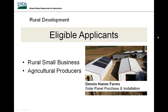Our second group of applicants are ag producers. These applicants do not need to be located in a rural area, but must have 50% of their income from their agriculture operations. This would eliminate hobby farms where a majority of income is from off-farm activities. This is determined by the latest year's tax returns using gross income and sales, not net income. There is no minimum size of a business required.